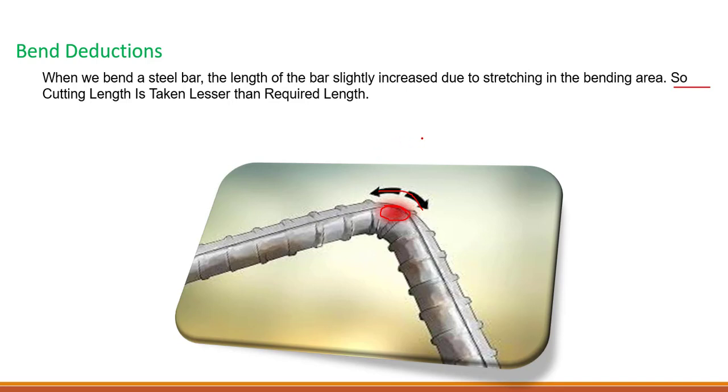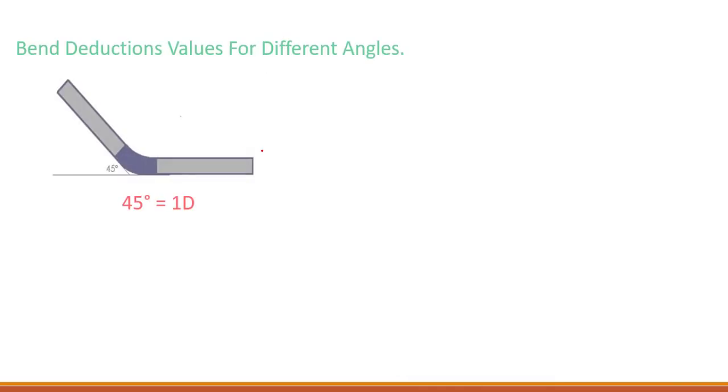Let's look at different bends and their deductions. The first one here is bend deduction values for different angles. First one here is 45 degree bend. If we bend a steel bar at 45 degrees, we will do the deduction as 1D. D is basically diameter of bar. 1 multiplied by diameter of bar is the deduction for 45 degree bend.